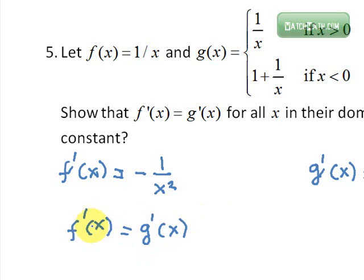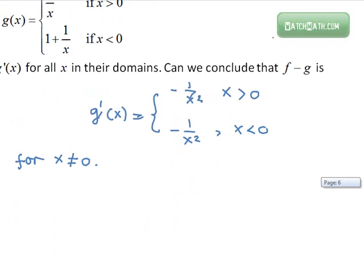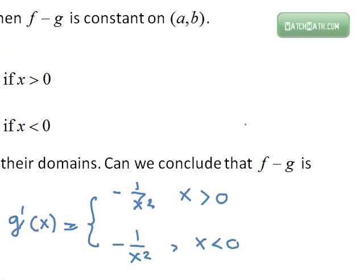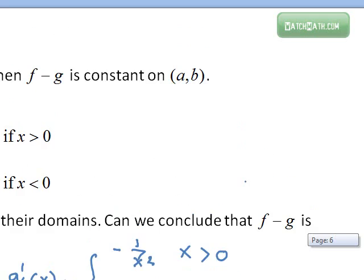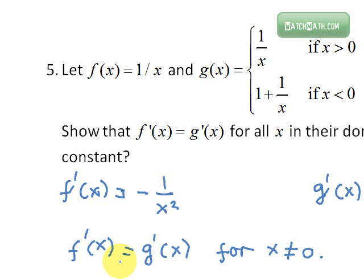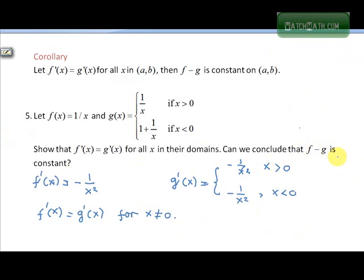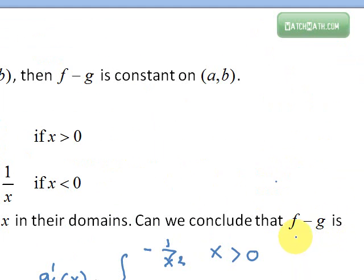This holds for x on the domain of both of them. Now, can we apply this corollary to our problem? We have f prime of x equal to g prime of x. In order to conclude that f minus g is constant — and here constant means constant everywhere — we want to conclude that f minus g is constant everywhere.